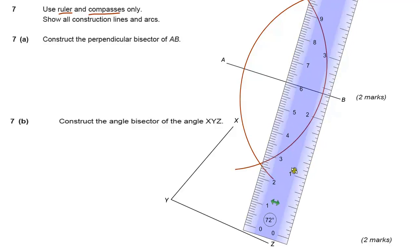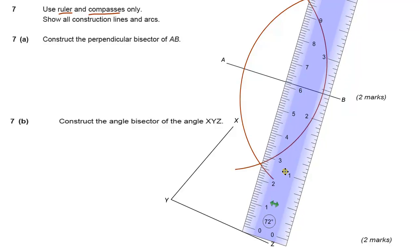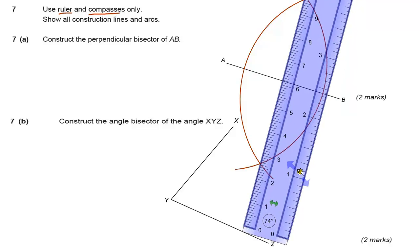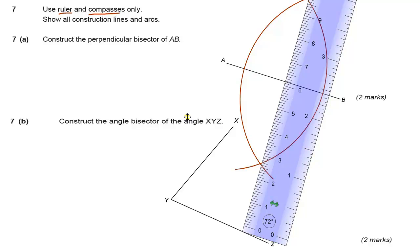So then we need to be as accurate as possible. These sort of drawing questions are marked by using an overlay. So the person marking it will just have an overlay on a computer or tracing paper, and they will just make sure your points are within certain tolerances on that overlay. If it's not, you'll lose marks.